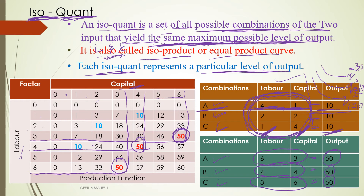Isoproduct and isoquant mean the same thing — the same level of output can be produced using different combinations of labor and capital. That combination can be represented graphically, which is why we use the isoquant.